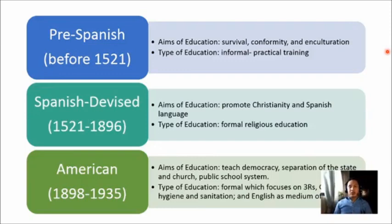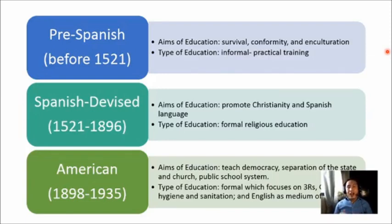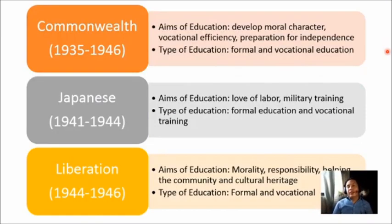The type of education during the American Period was formal, focusing on the three R's, good moral and right conduct, hygiene and sanitation, and English as the medium of instruction. It included seven years of elementary education — four years primary and three years intermediate — plus secondary and tertiary education. The Education Act of 1901 established the Philippine Normal School (now Philippine Normal University), and in 1908 the University of the Philippines was founded so Filipino teachers could teach.